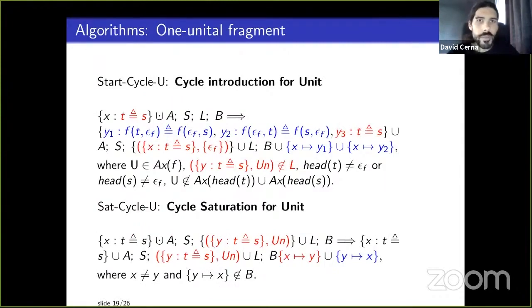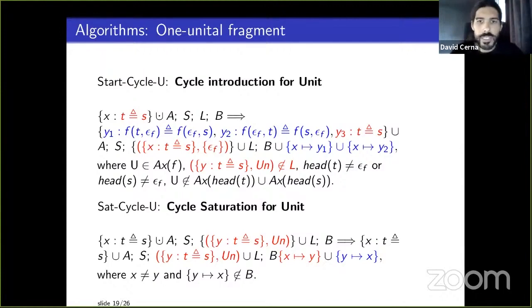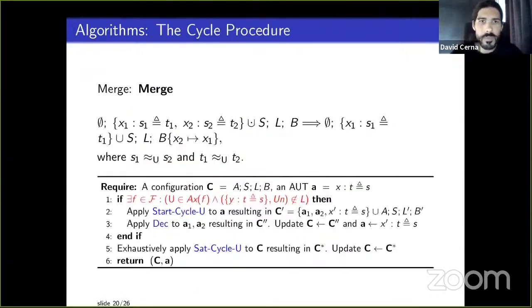For the one-unital fragment — one unit function — we introduce the start_cycle and saturate_cycle rules. Start_cycle implements the DHU rule and tracks cycling in set L. Bindings are added to the binding set for each resulting AUP. The saturate rule handles saturation: the original AUP remains with a fresh variable after start_cycle, and saturate_cycle consolidates all cycles together, also saturating whenever that term appears elsewhere in the AUP.